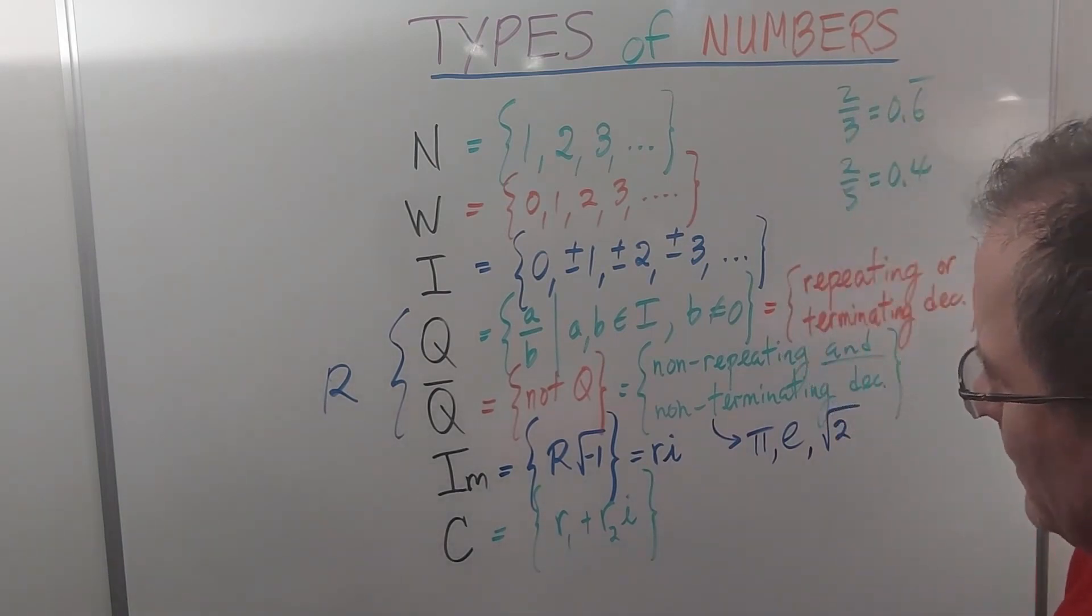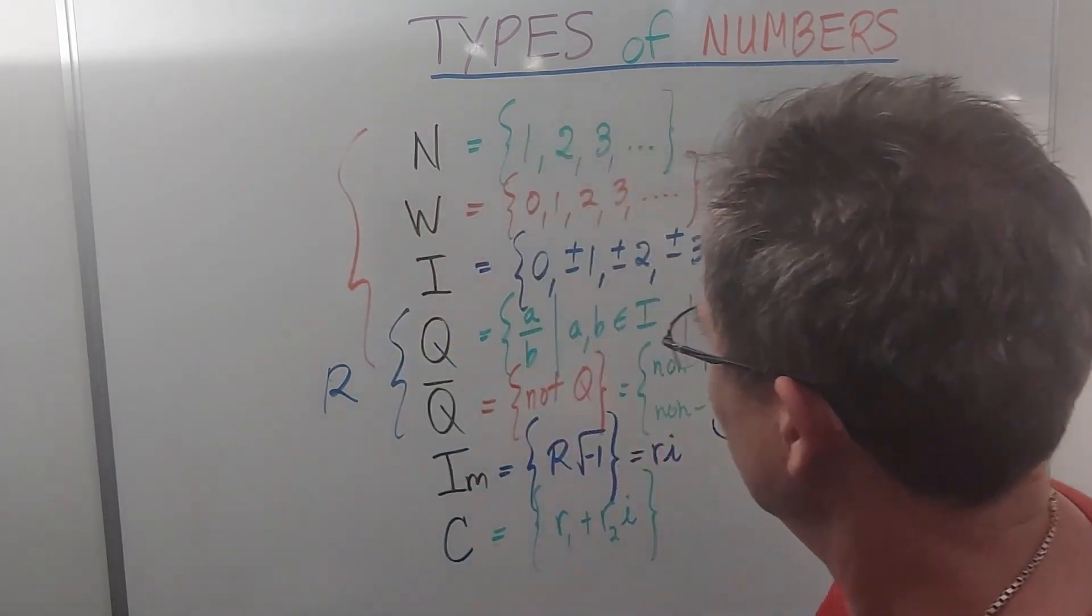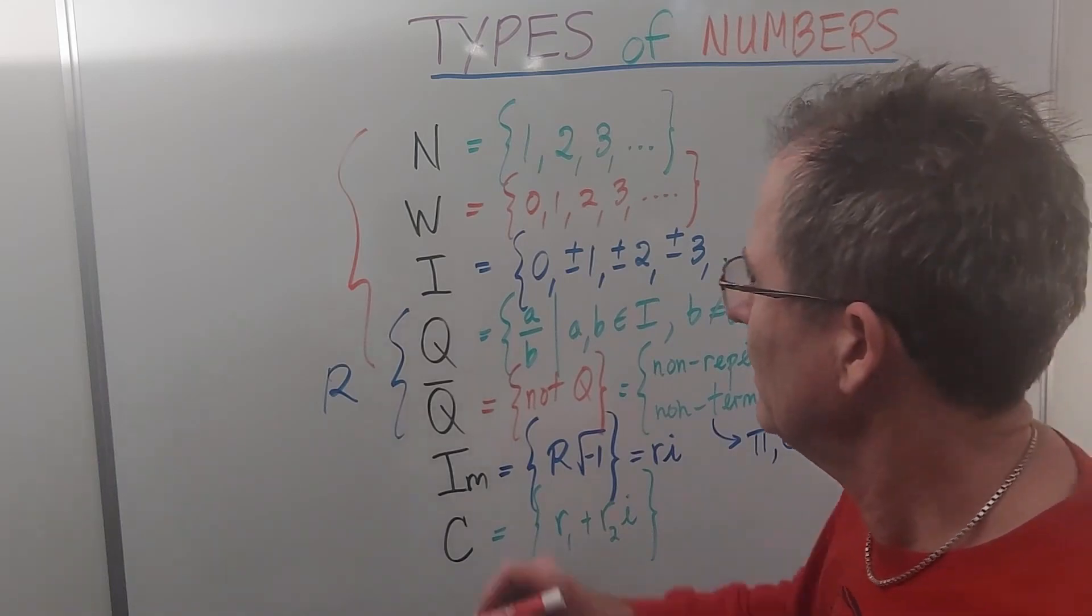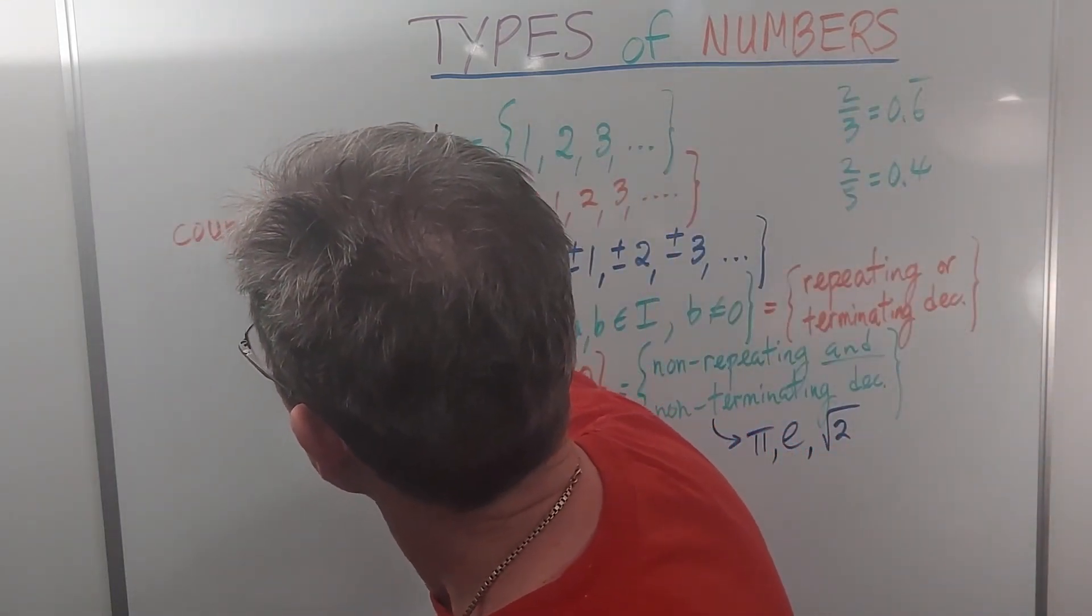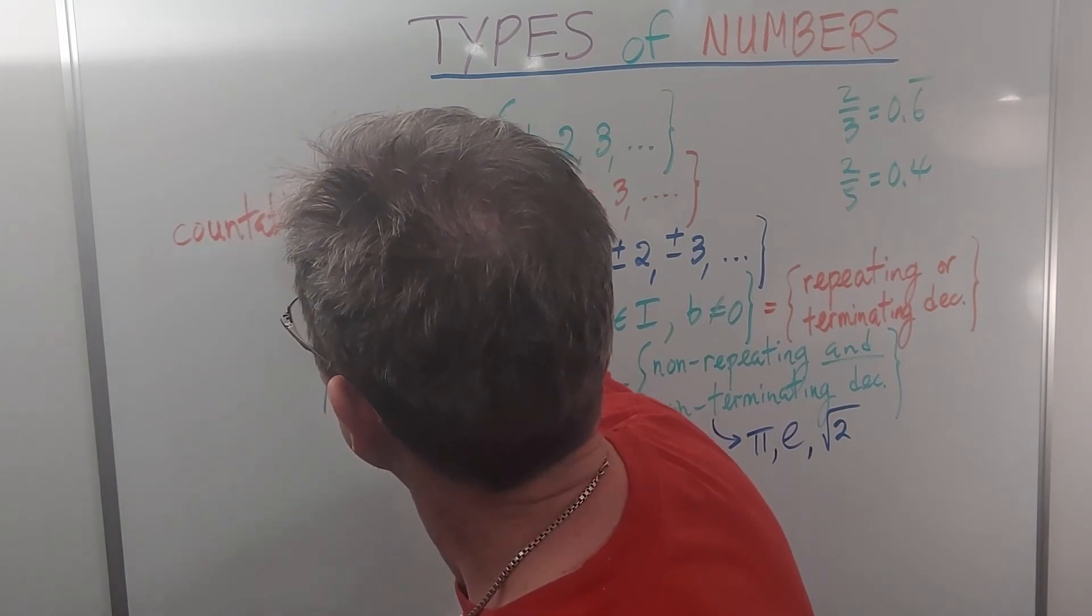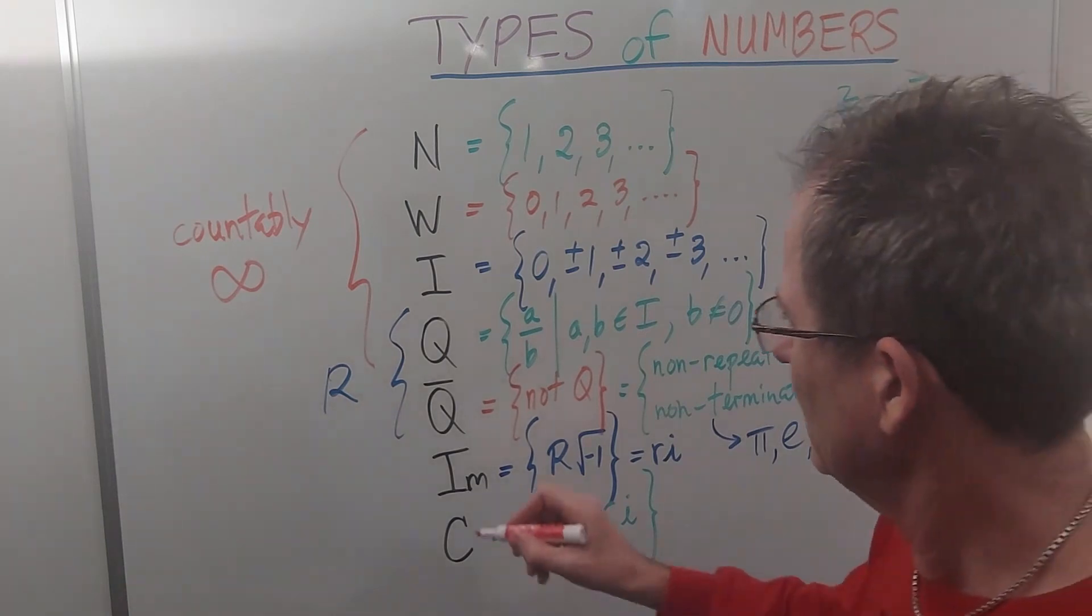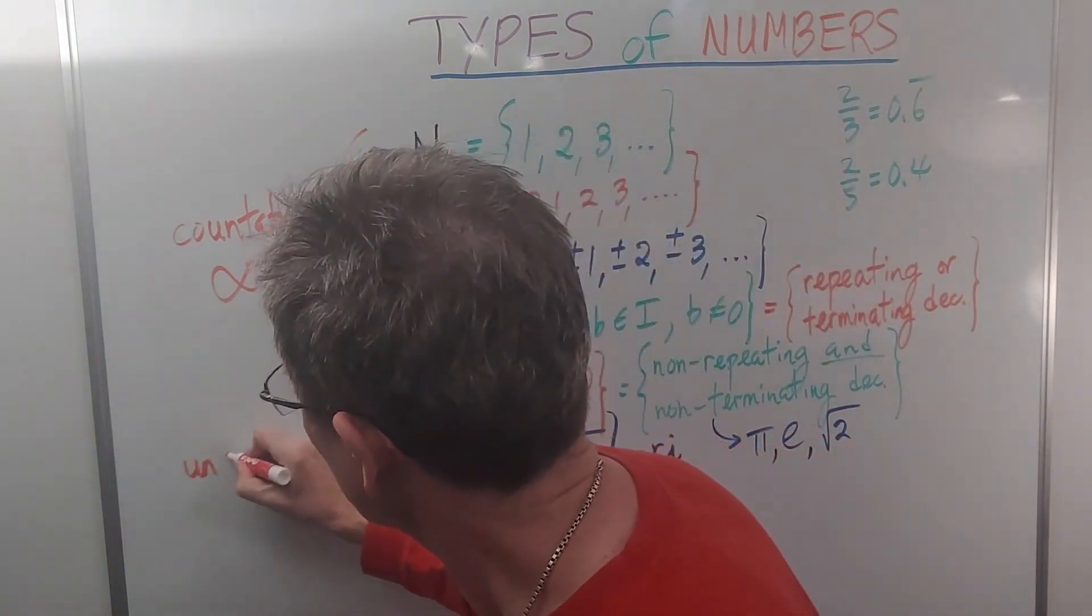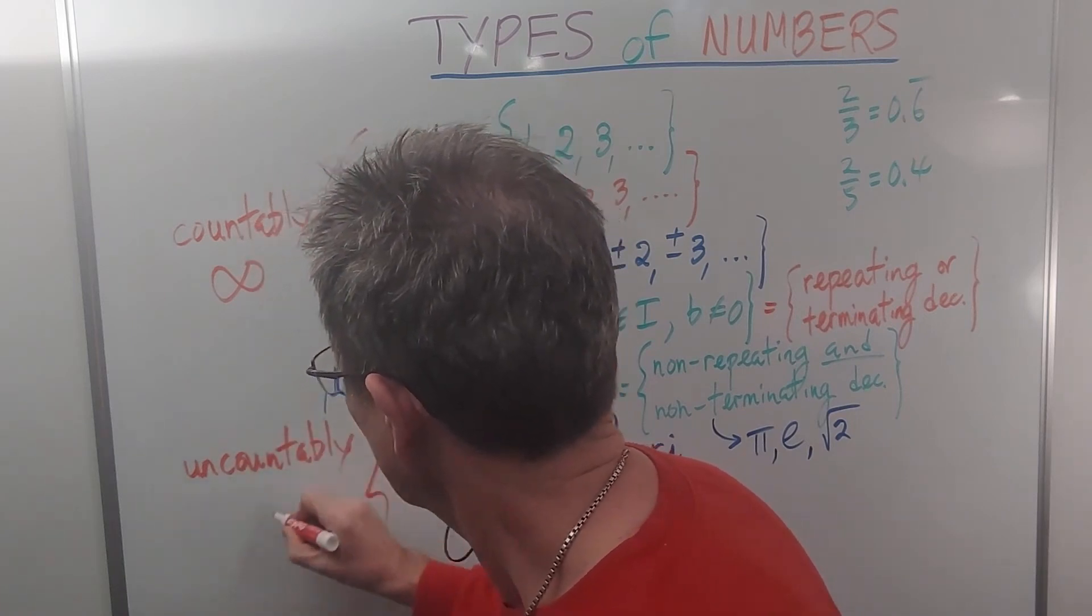Now, one more thing about this. The first four types of numbers are considered to be countably infinite. All of these sets are infinite, whereas the last three are considered to be uncountably infinite.